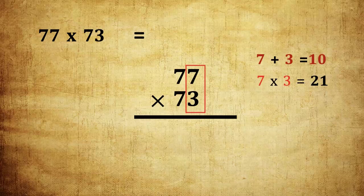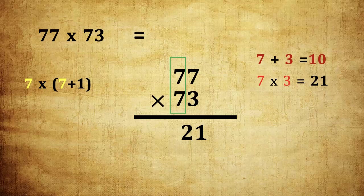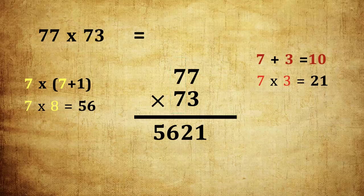Then multiply 7 into 3 is 21, so write 21. Previous digits 7 and 7. The next step is multiply 7 into 1 more than the 7, it means 7 into 8 is 56. We can write 77 into 73 is 5621. Let's see another example.